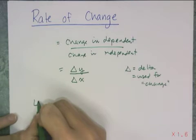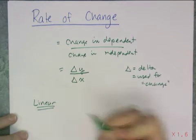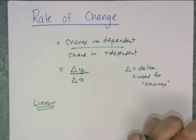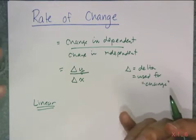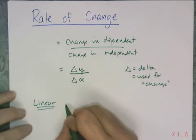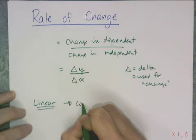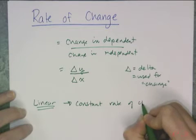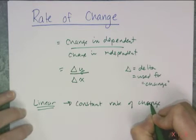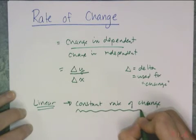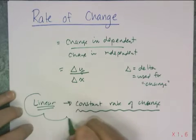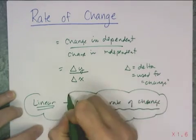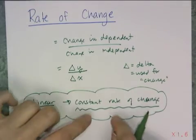And for a linear set of data, and think back to the example of the constant speed, it tells you that in order to be linear, you need a constant rate of change. That's the key. To be linear, you must have a constant rate of change. So things that are linear have a constant rate of change.